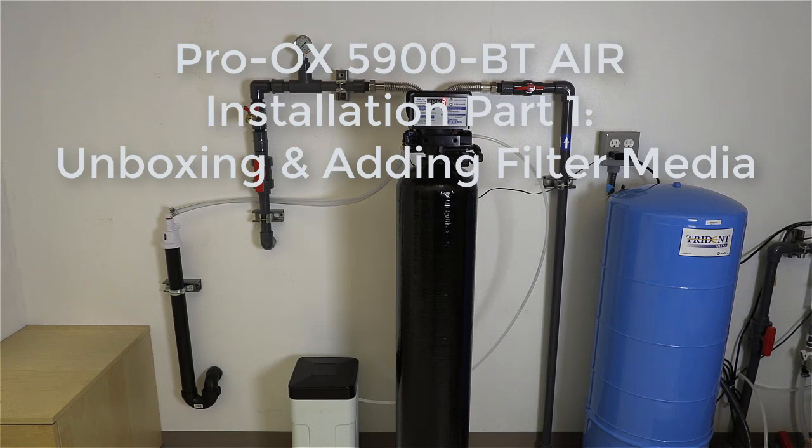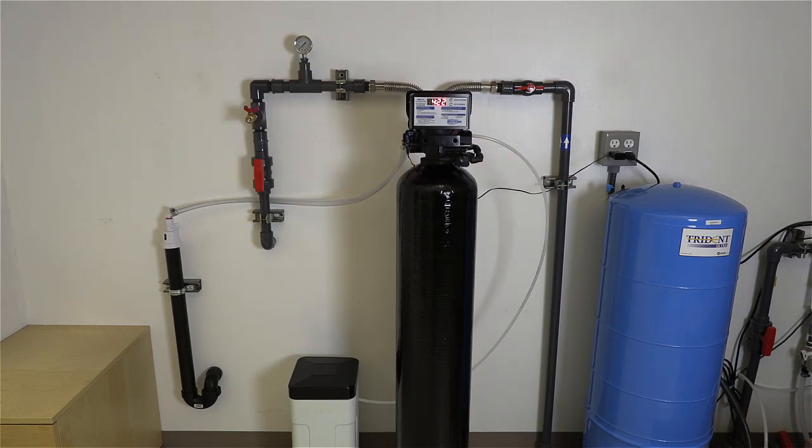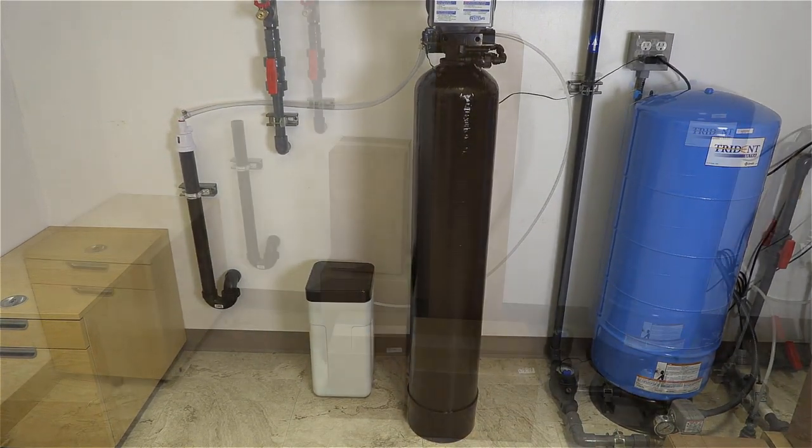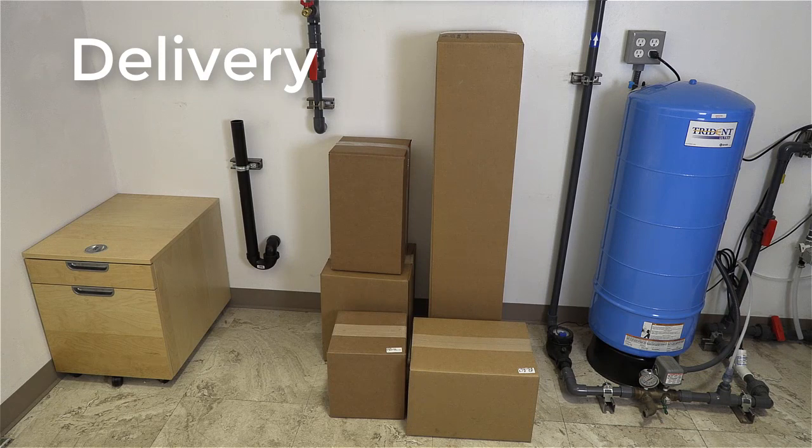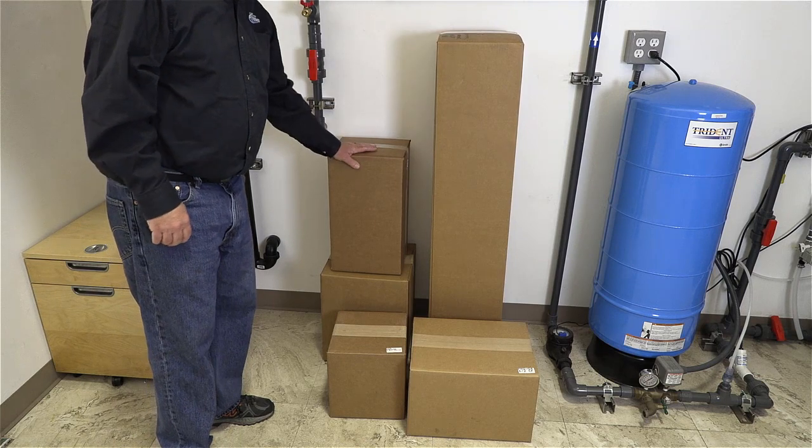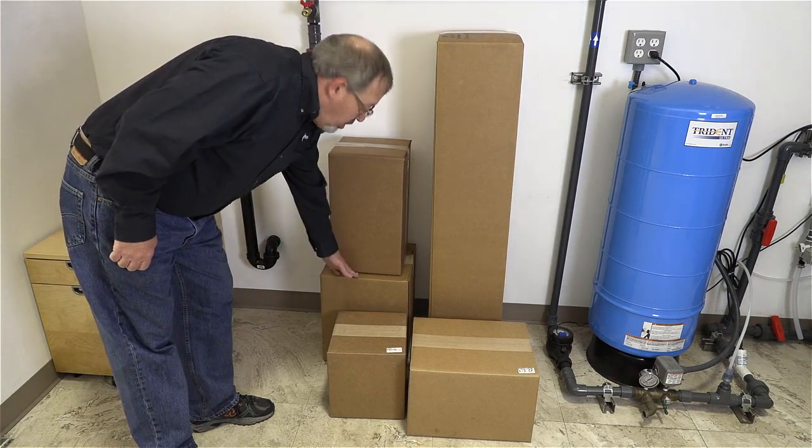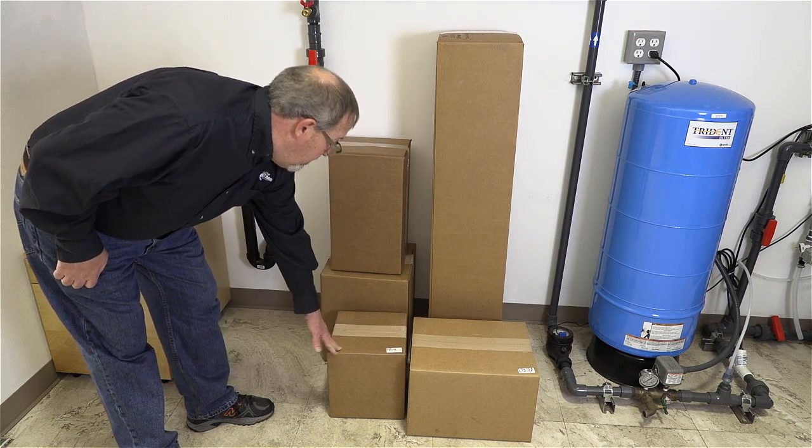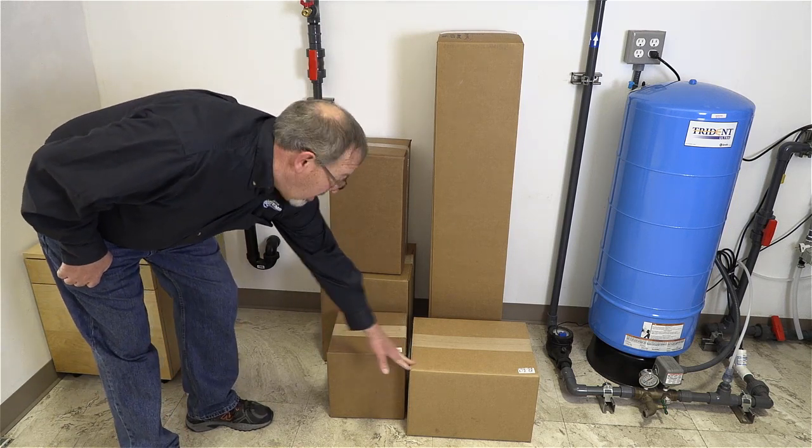Today we're going to demonstrate how to set up our Pro-Aux Air with the optional chlorine side tank. This is how your unit is delivered: you have your media tank, your side chlorine tank, your control valve and gravel, your ChemSorb, and your Pro-Aux media.